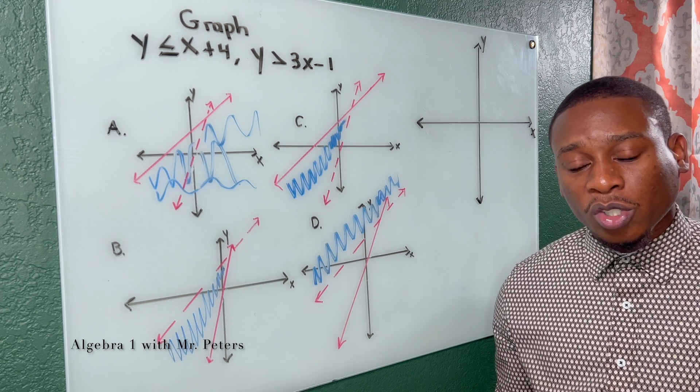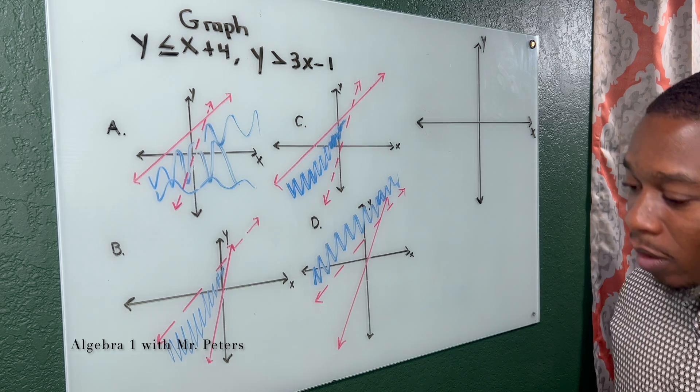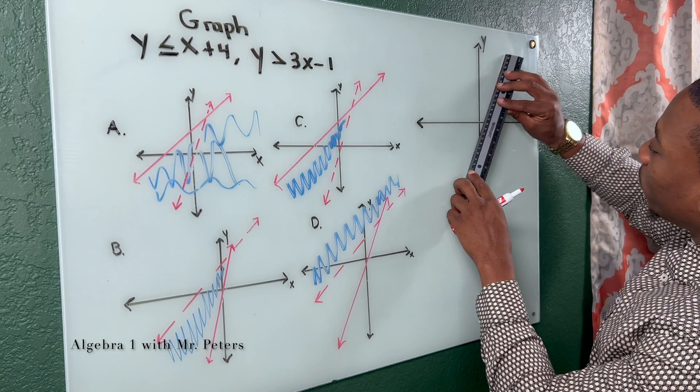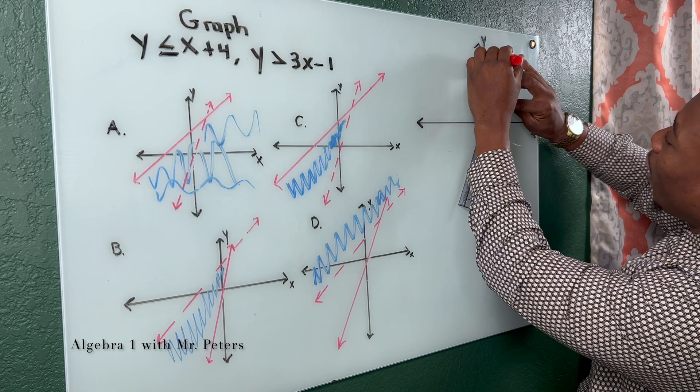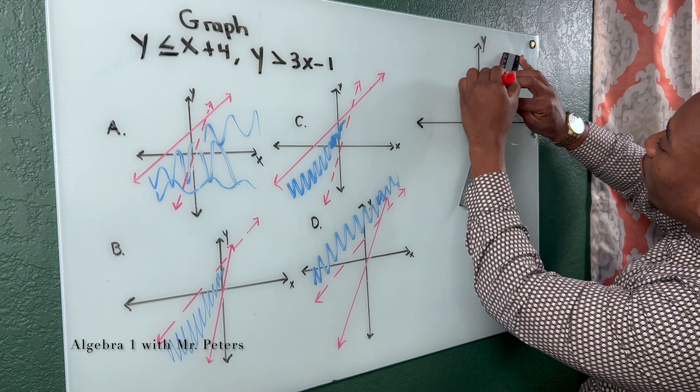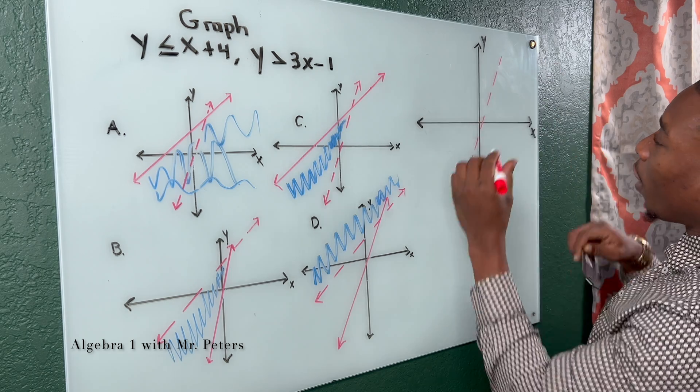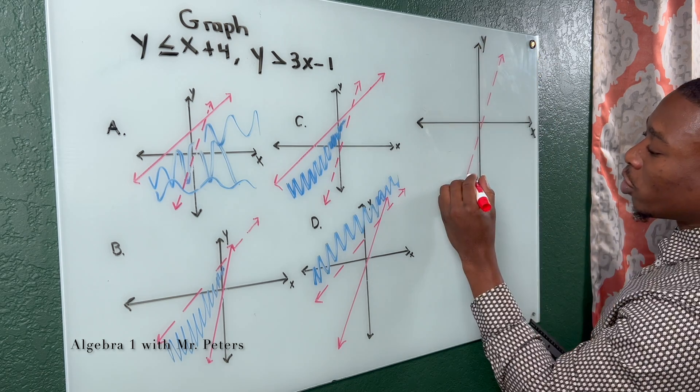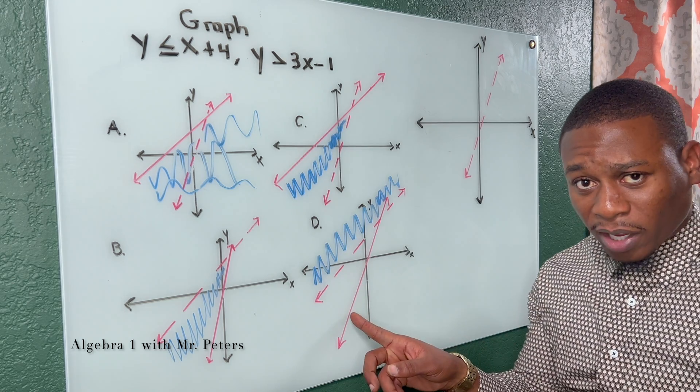So what I'm going to do is just create a quick sketch of what this graph should look like. So once we do that, we know the y-intercept's negative 1. So my line is going to look something like this. So this is the line 3x minus 1. This is probably going to be the bottom line.